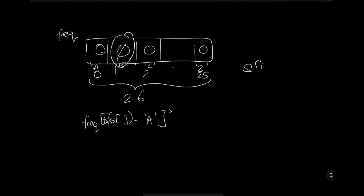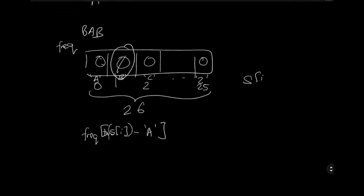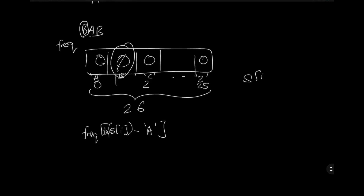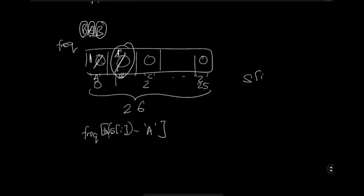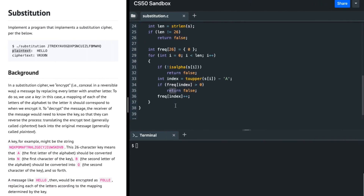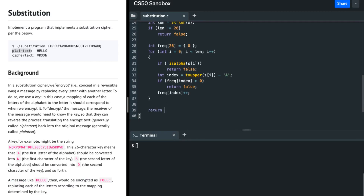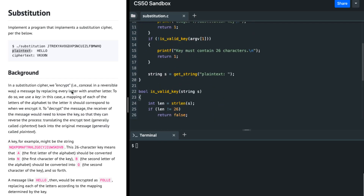So how this works: let's say my key is B-A-B. I iterate over the string, incrementing the frequency array for each letter. When I reach the second B, I see that frequency at that index is already greater than zero, so I know there's a repetition. The validity check fails and I return false.